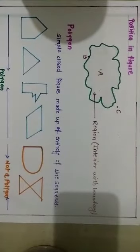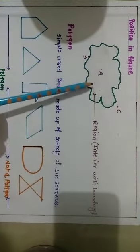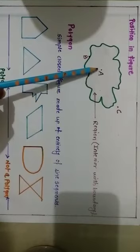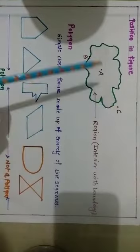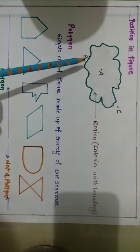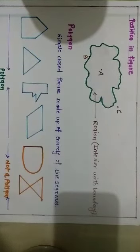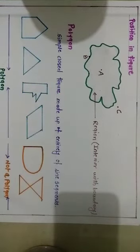Now let us understand the different parts of a closed curve. Here I have drawn one closed figure and shaded the inside part with a pencil. This inside part of a closed figure is called the interior, and point A lies in the interior. The outer line of this closed figure is called the boundary, and point B lies on the boundary. So interior, exterior, and boundary are the three parts of a closed figure. The interior part of a closed figure along with its boundary is called a region.